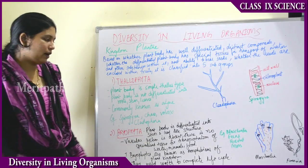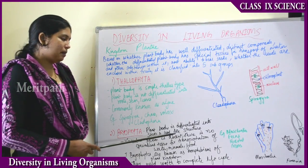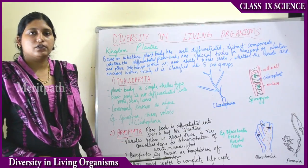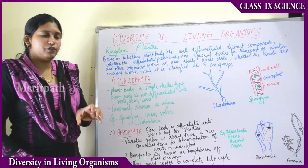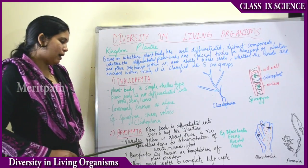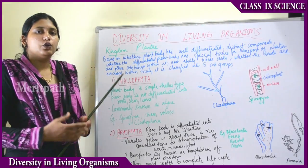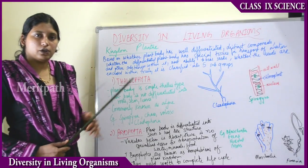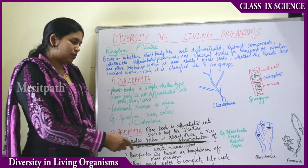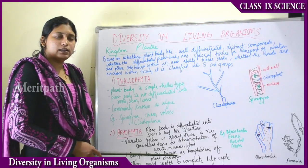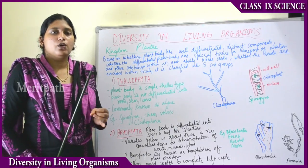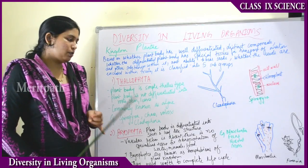The next subgroup is Bryophyta. In Bryophyta, the plant body is differentiated into stem and leaf-like structures — not very much differentiated, but slightly. The vascular system is absent, meaning there is no specialised tissue for the transportation of water, minerals, and food — no xylem and phloem.